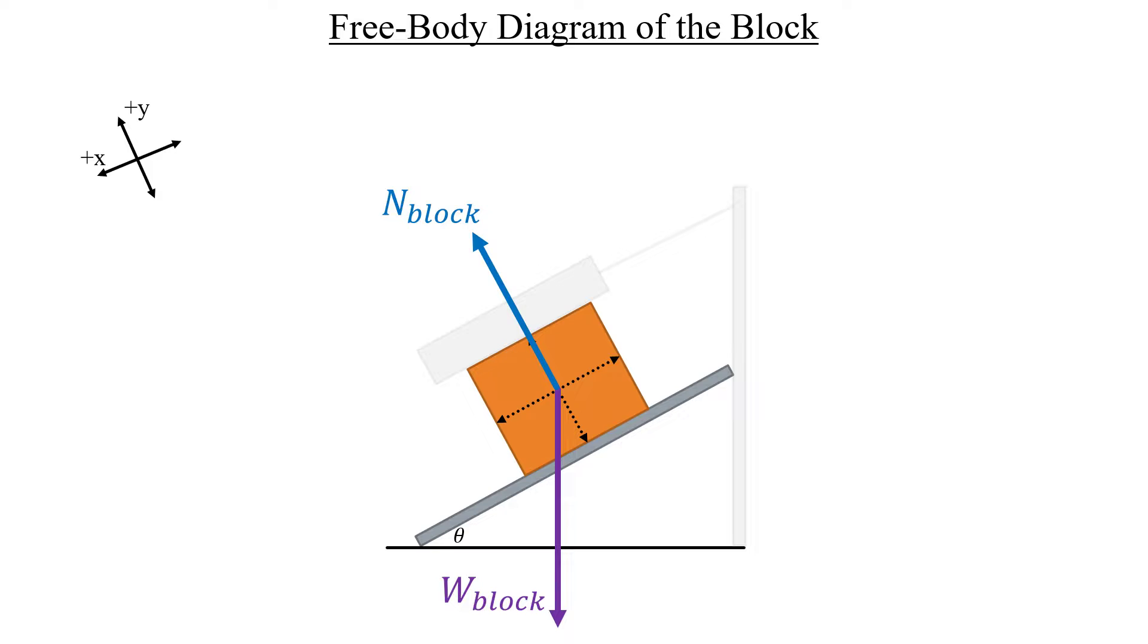Now, pay close attention here because we do have another normal force to account for, and this comes from the plank pushing down on the block as it sits on top of it, which is represented by this normal vector in the minus y-direction. It's not a weight vector because weight only applies to the object we're investigating, and we're not investigating the plank right now. We're investigating the block, so it has to be a normal force.